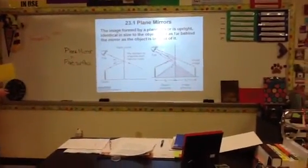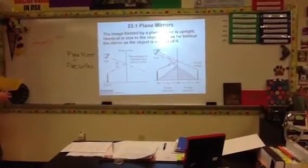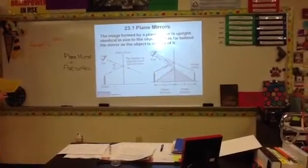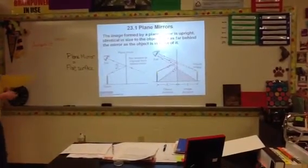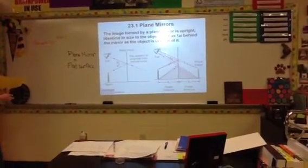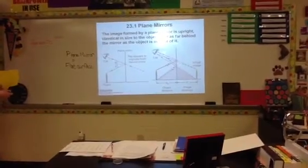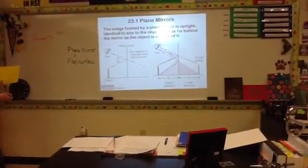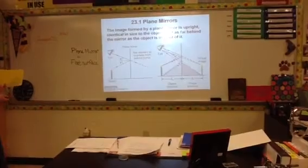Okay, so I have my light that's coming, bouncing off, and it's going into my eye. However, I don't see the image over here where my eye is. What our eyes perceive is that the image is really originating from behind the mirror.